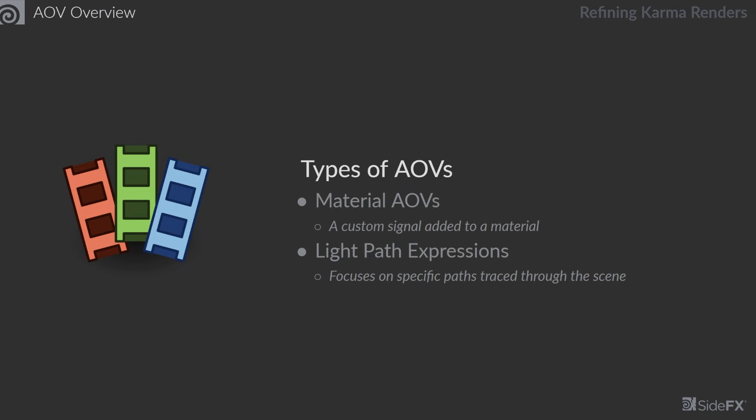The other type of AOV often seen in Karma is light path expressions. This is a big term we'll break down more in a later video. Basically, this focuses a specific AOV on certain paths being traced through the scene. If you're tracing rays that hit objects making a diffuse bounce and then maybe a specular bounce, you can define with a light path expression which specific bounces you want to focus on. There's fine-grained control to really dial in certain types of light rays and light paths, and most of what you set up in the Karma render settings will be light path expressions.